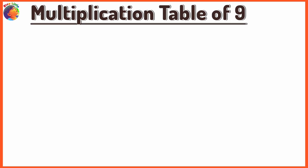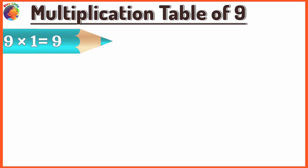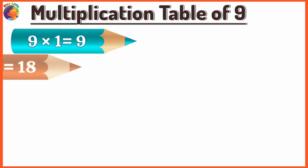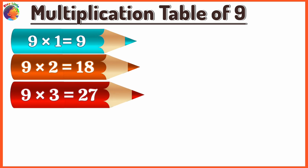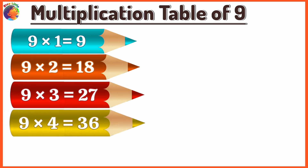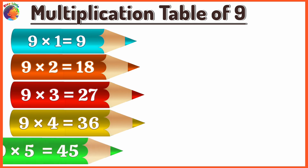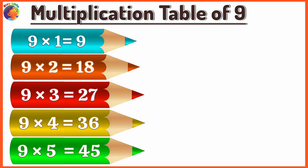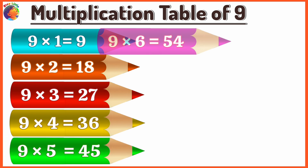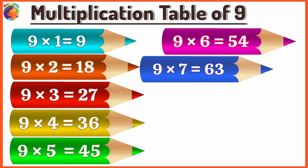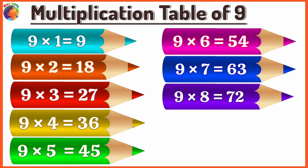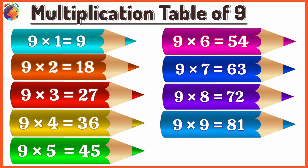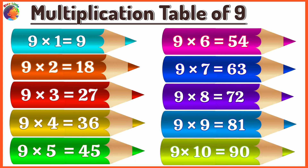Multiplication Table of 9. 9 x 1 is 9, 9 x 2 is 18, 9 x 3 is 27, 9 x 4 is 36, 9 x 5 is 45, 9 x 6 is 54, 9 x 7 is 63, 9 x 8 is 72, 9 x 9 is 81, 9 x 10 is 90.